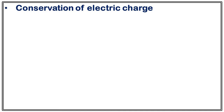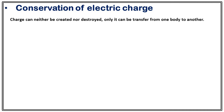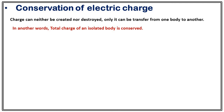Now let's look at one fundamental conservation law: conservation of electric charge. It states that charge can neither be created nor destroyed — it can only be transferred from one body to another. In other words, the total charge of an isolated system is conserved. You cannot create an electron; you cannot destroy an electron — it can only be transferred from one body to another.